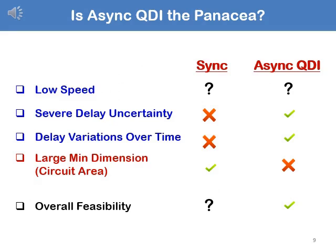The issues regarding synchronous versus asynchronous logic — whether printed electronics or conventional CMOS — are usually qualified in terms of speed, delay uncertainty, delay variations, and IC or printed area. In terms of severe delay uncertainty, asynchronous logic is much better because it innately accommodates high variations. The IC or printed area for asynchronous is usually two to three times larger, but in terms of overall feasibility, asynchronous logic appears more feasible.